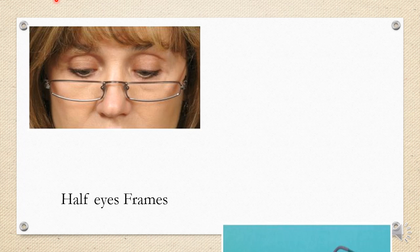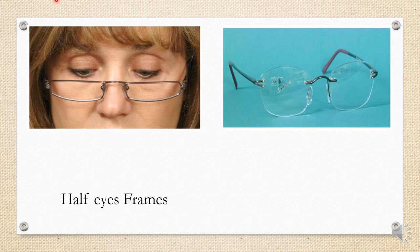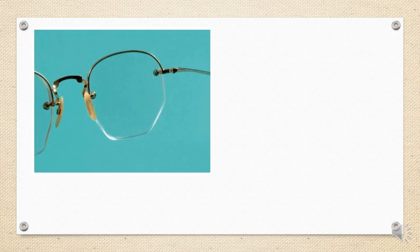Rimless frames, also called three-piece frames, have no actual eye rim or eye wire. Only three pieces are present: a bridge and two temples. A type called semi-rimless gives the appearance of a supra frame behind the lens, but that part provides no support — the lens is directly mounted with two screws.